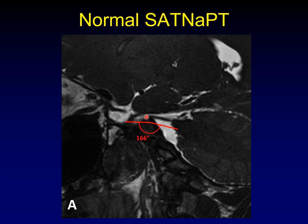You can imagine that on a reformatted image it might be difficult to pick out the most superior of those rootlets, but that's our target. This is a normal angle of 166 degrees, and the average value is 170 degrees.